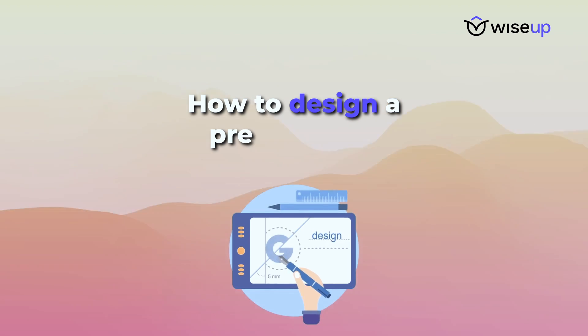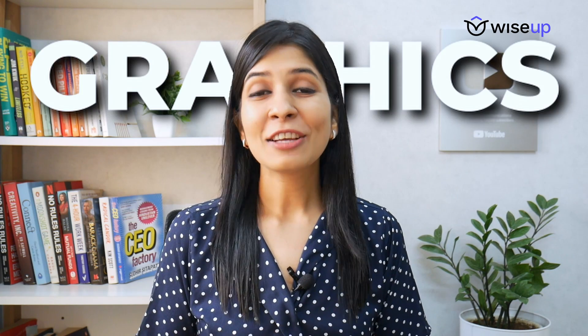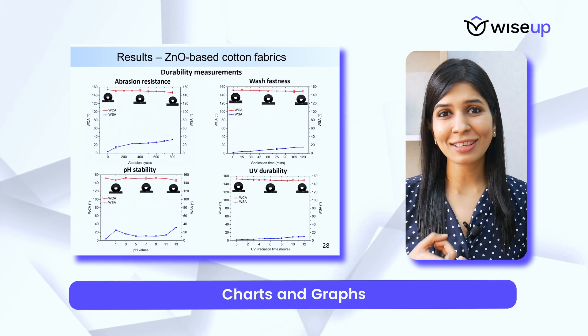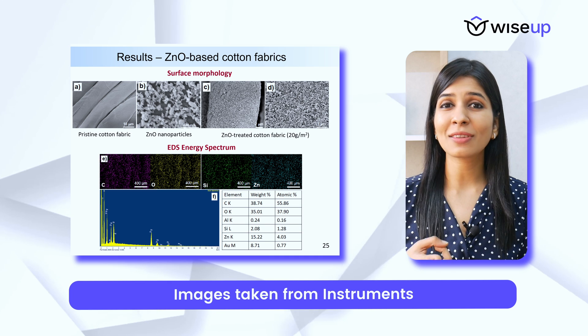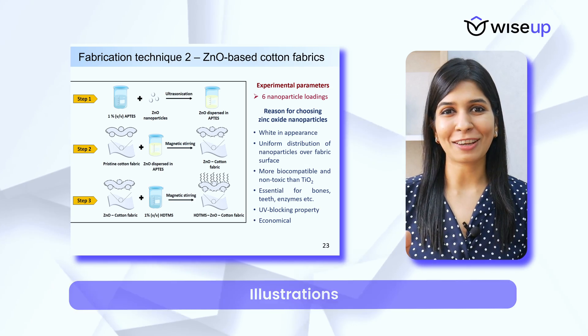Now that we know how to organize the content, let's talk about the designing part. When designing a research presentation, make sure you choose a simple template that doesn't occupy too much slide space, with a nice color theme. The main thing that makes a research presentation stand out is the graphics — whether it's photographs, charts and graphs, instrument images such as SEM or TEM, or illustrations for your methodology section. All of these should be of the highest quality, because the higher the quality of these images, the more attractive your slides and presentation will become.